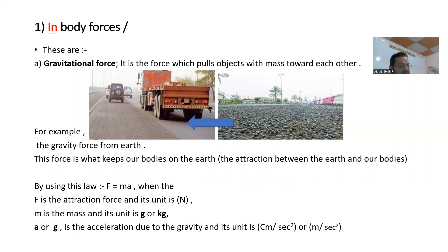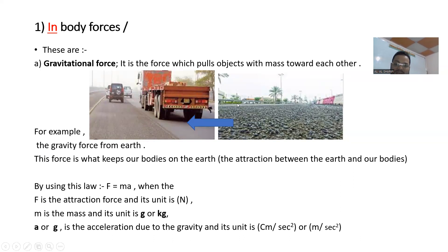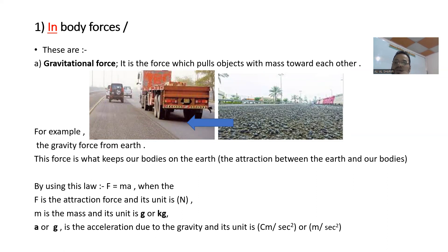That means it's an attractive force between two masses — the first one approximately huge, the second very small. For example, the gravity force from earth keeps our bodies on the earth. It is attraction between the huge mass of the earth and our bodies, like the stone and the big car, like the sun and our other planets. This is how all these planets stay flying around our sun, using the law F equals mass multiplied by acceleration.